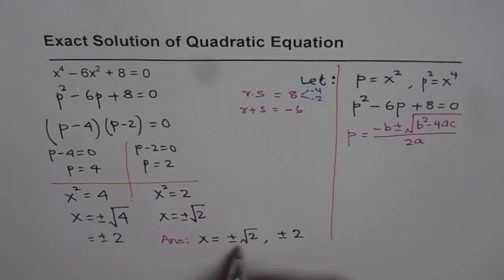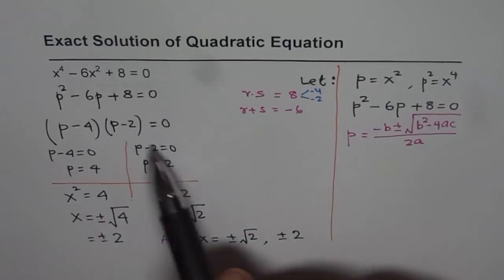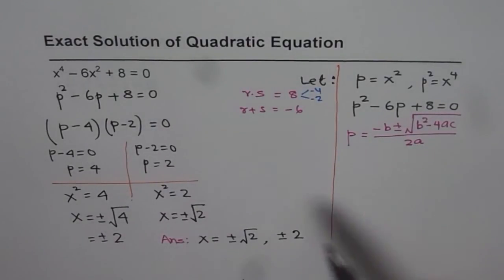There are four different answers for x, and that is expected in a quartic equation. The maximum number of real solutions could be 4 for a quartic equation. In this case, we could do without even applying the quadratic formula since we could factor it. You could always use the quadratic formula even in such cases.